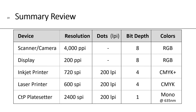For laser printers, a typical resolution is around 600 spots per inch or 200 lines per inch for 4-bit, and these are typically just CMYK, so you can't do spot colors. For CTP computer-to-plate plate setters, their resolution is 2,400 spots per inch, which will give you 200 lines per inch. These are single-bit binary devices, so they're monochromatic, and our laser is 635 nanometers.